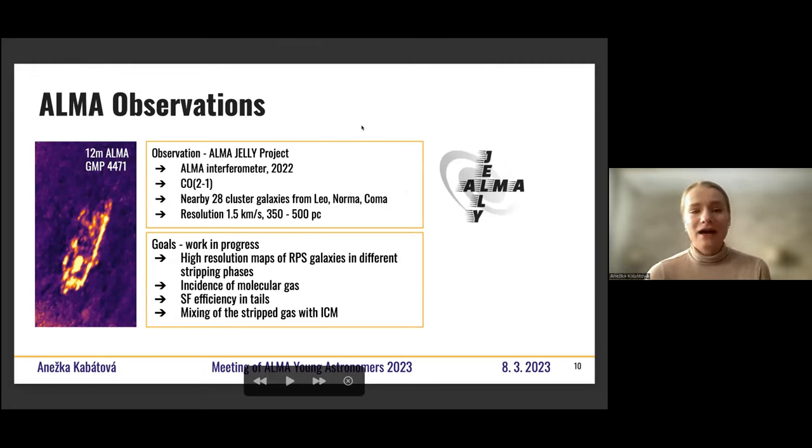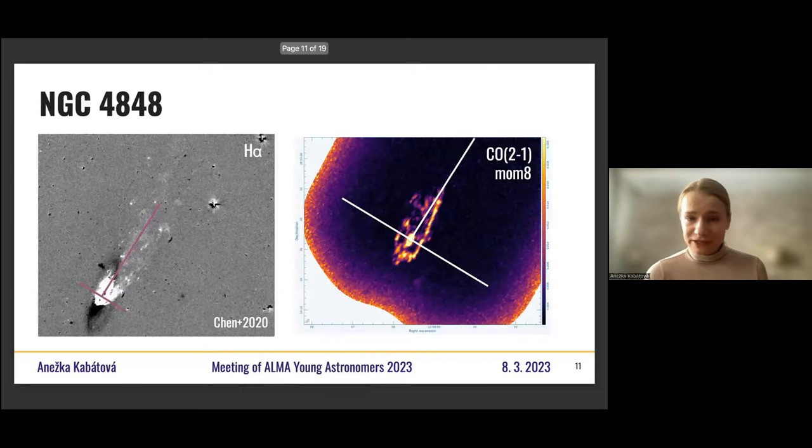So I thought that I might do the same with our wonderful large program, ALMA Jelly. I'm going to just briefly introduce it. It's a 28 galaxy observation. They are in nearby clusters, Leo, Norma, and Coma. We observe them in CO 2-1. And the idea is to study the incidence of molecular gas, both in disk and the tails. Also to study the star formation efficiency in tails. And the exact process of mixing of the stripped gas with the surrounding ICM, which is very interesting and not very well understood to this point.